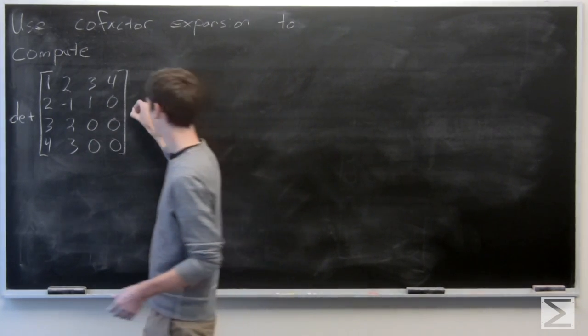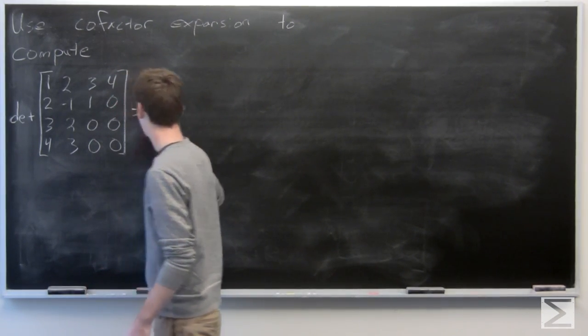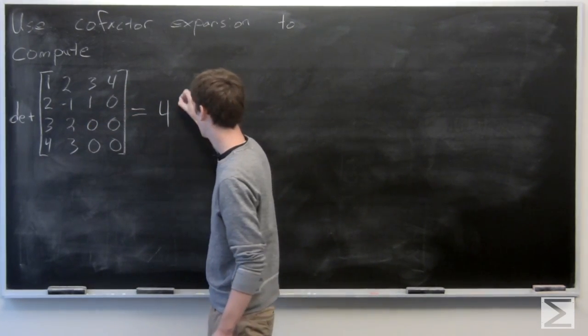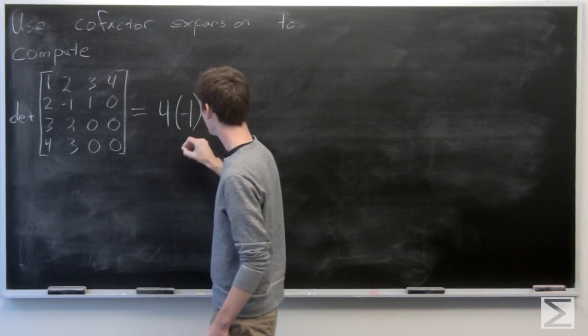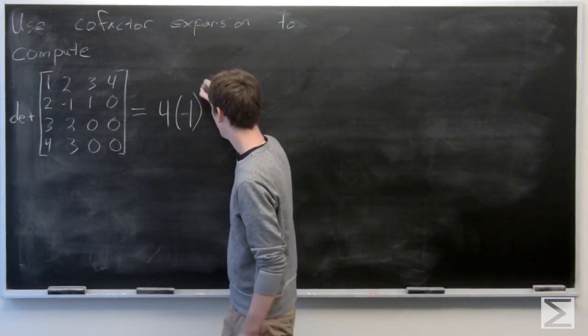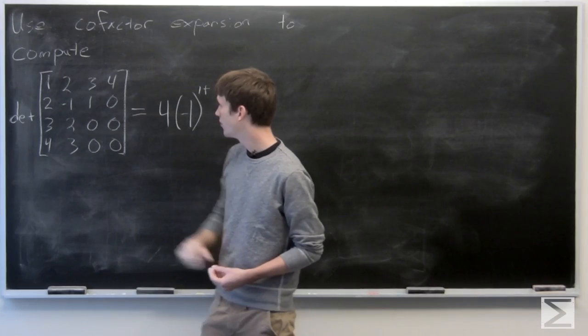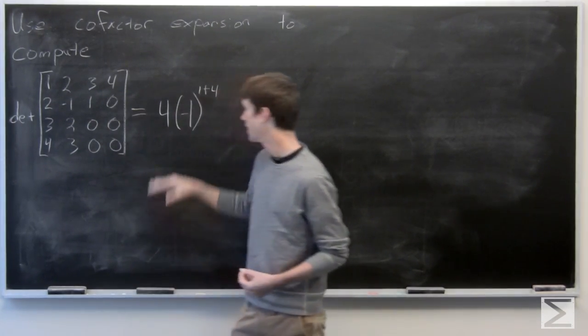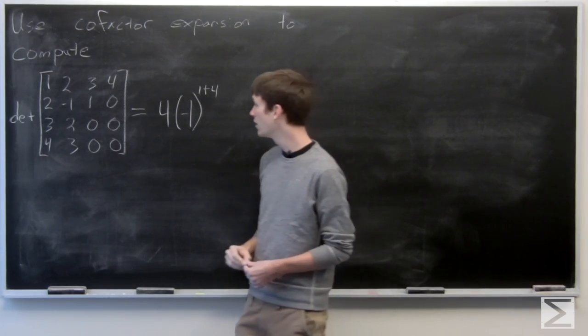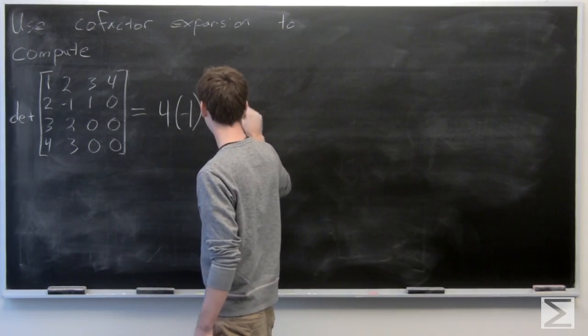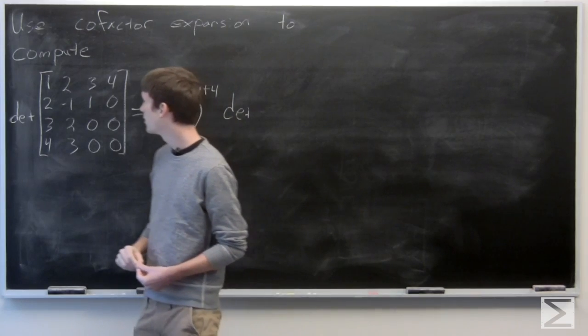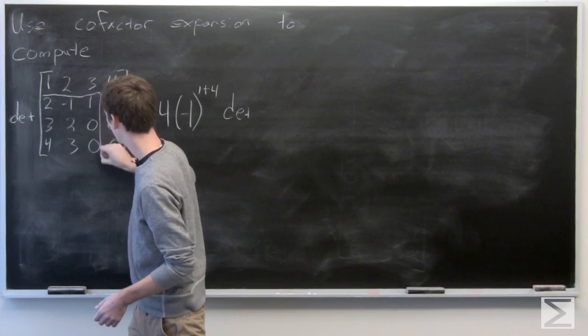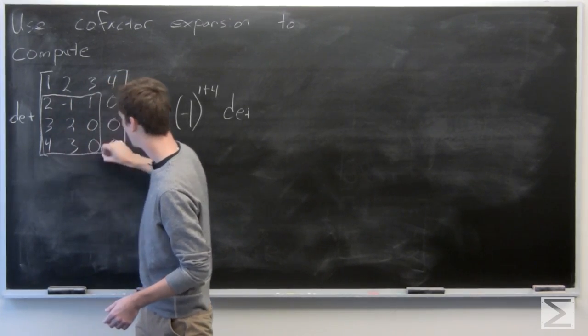So we have 4 times negative 1 to the power of row 1 plus column 4. So it's negative 1 to the fifth power, and then times the determinant of our matrix there.